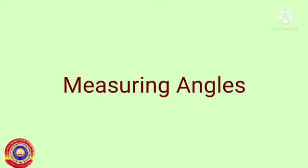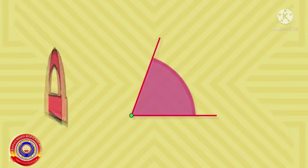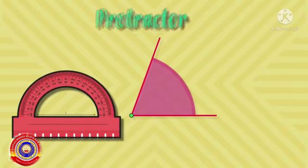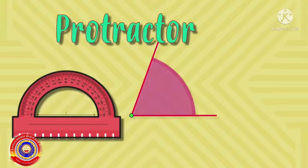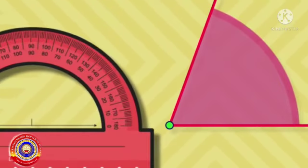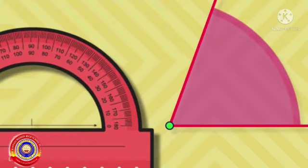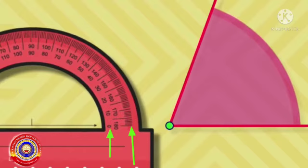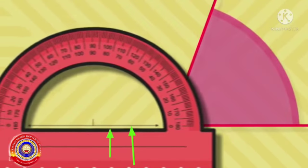Next, measuring angles. Now we are going to measure an angle. Which instrument is used for measuring an angle? Yes, it is the protractor. The protractor is in the shape of a semicircle. It is divided into 180 equal parts. The protractor has two sets of scales: the inner scale and the outer scale. Both have measures from 0 to 180 degrees in both directions.